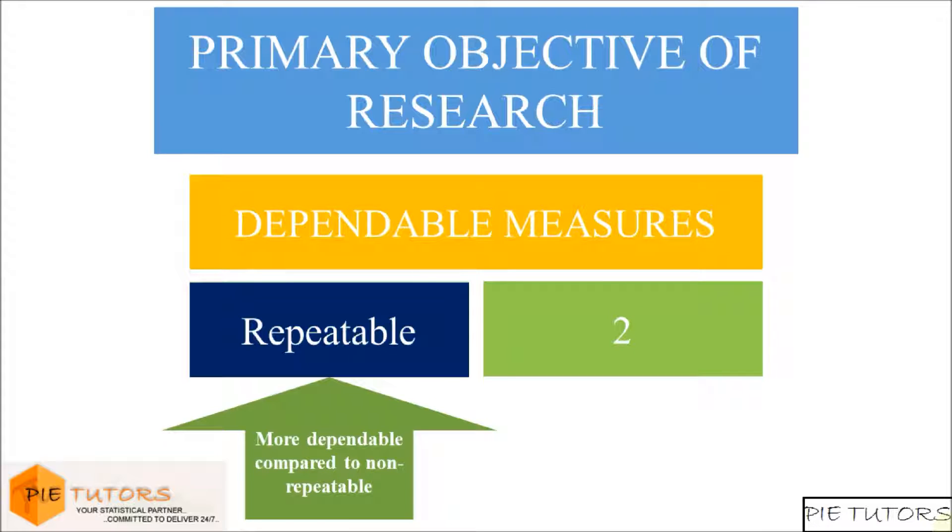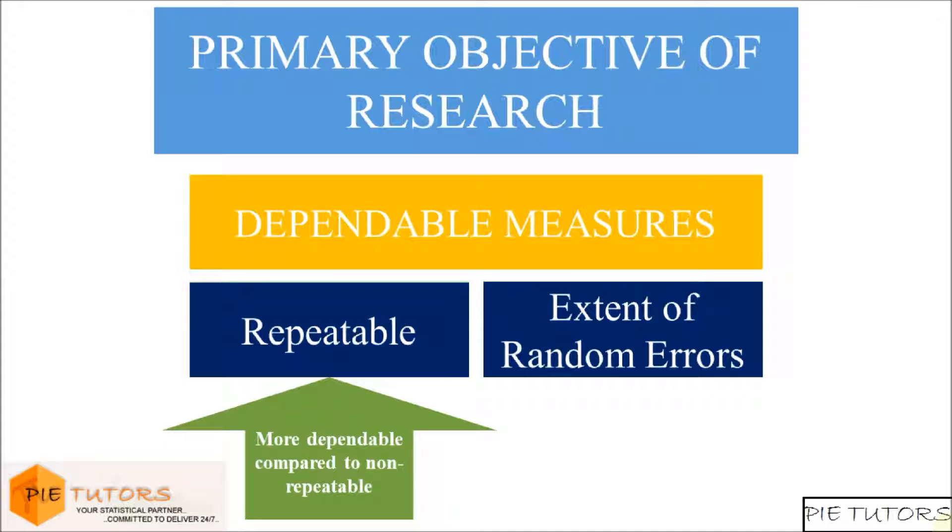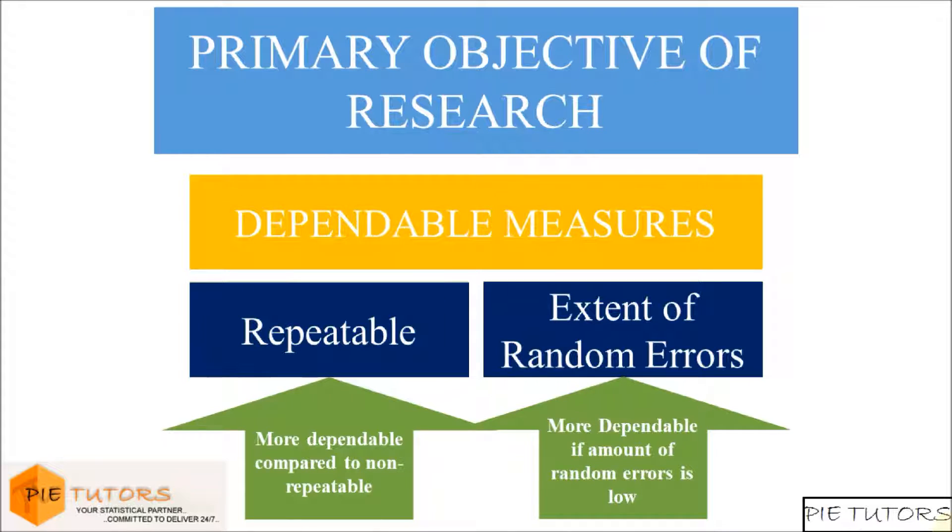Secondly, the dependability of a measure is affected by the extent to which only random influence is the source of measurement errors. The measure is considered more dependable if the amount of random influence is low.